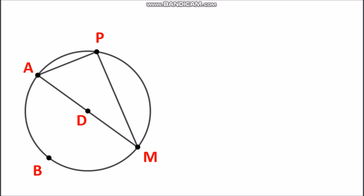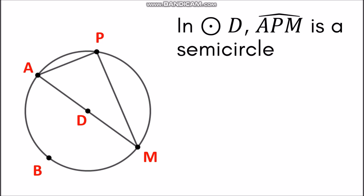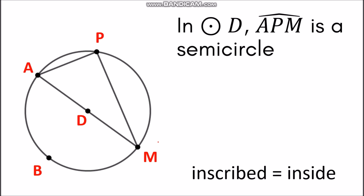Let's take a look at circle D. As you can see, we have a semicircle here — arc APM. Now aside from the semicircle, we can also see an angle, which is angle APM. This angle is inscribed in semicircle APM. When we say inscribed, that means it is inside, and the endpoints of the angle are also the endpoints of the semicircle.